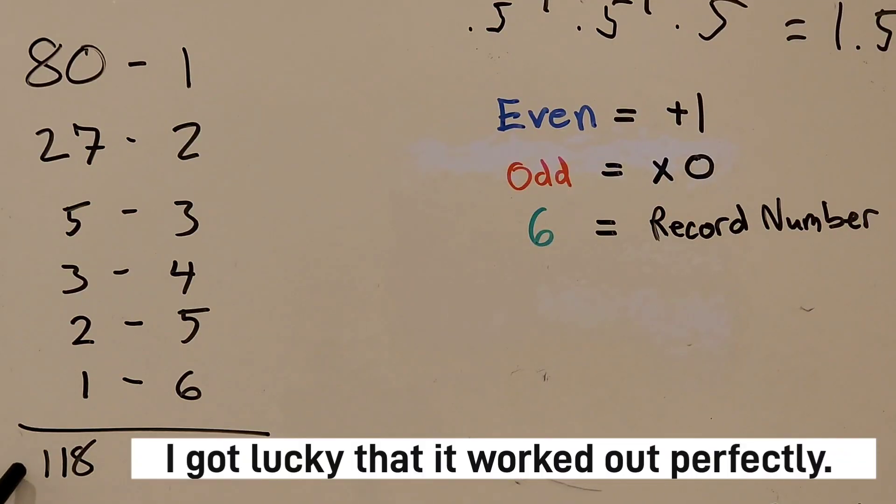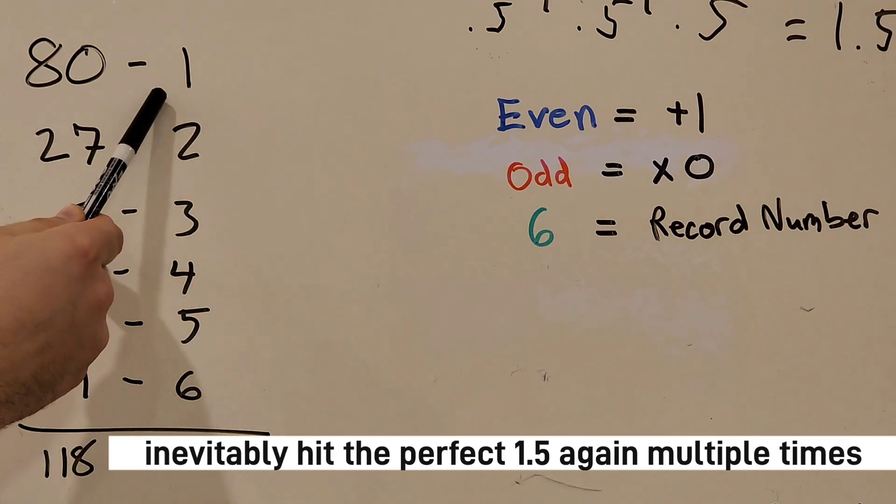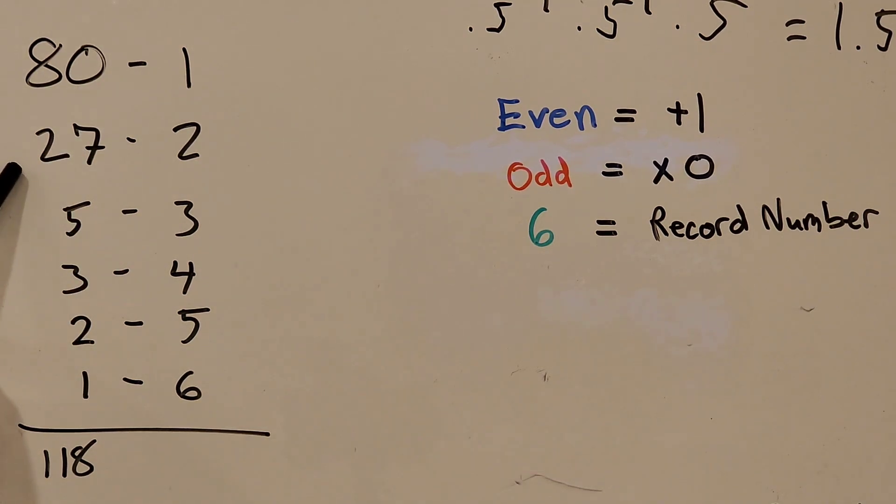Altogether, I had 118 successful sequences. 80 of those sequences ended in one point, 27 ended in two points, five ended in three points, three ended in four points, two ended in five points, and one ended in six points.